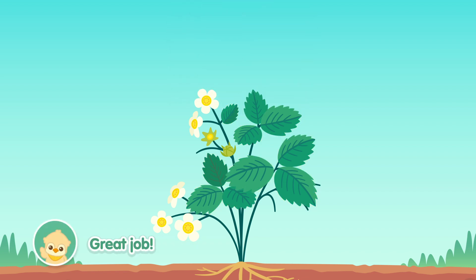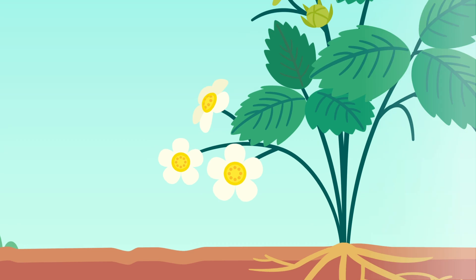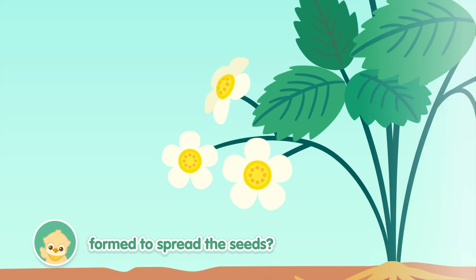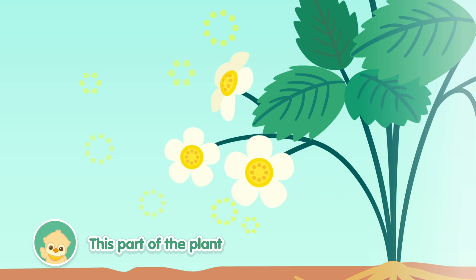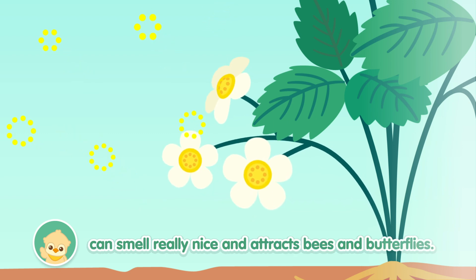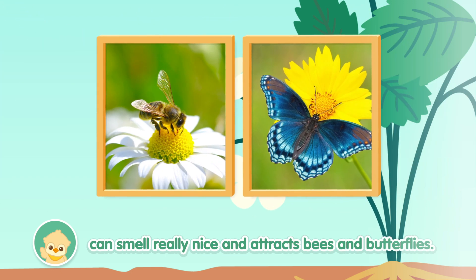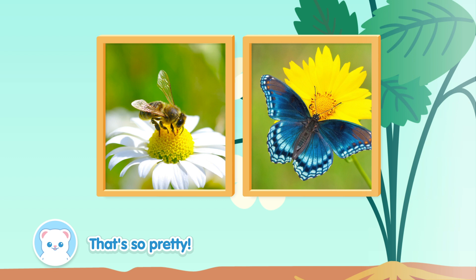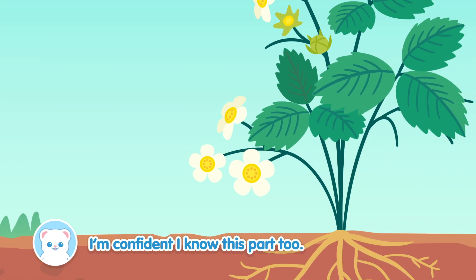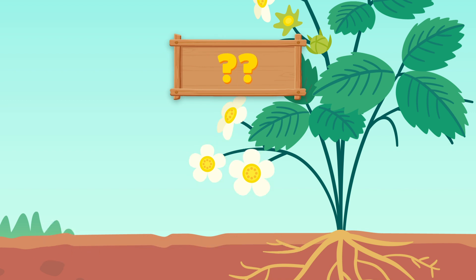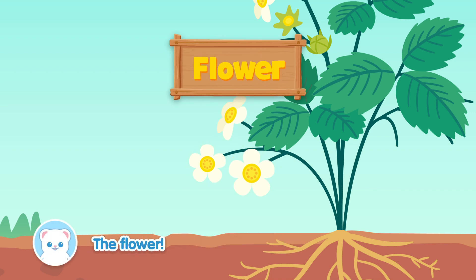Great job! Can you name the part where fruits are formed to spread the seeds? This part of the plant can smell really nice and attracts bees and butterflies. That's so pretty! I'm confident I know this part, too! The flower! Wow! You're right!